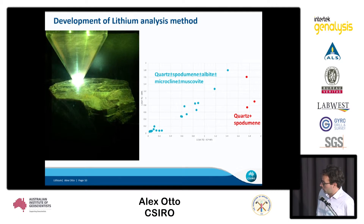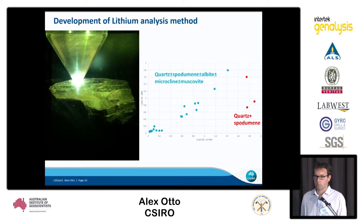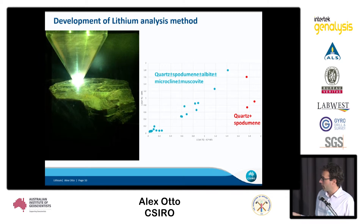On the right-hand side we had a suite of samples in two groups. One in blue is mainly a five-mineral situation with quartz, spodumene, albite, microcline, and muscovite. There is also a subset of samples from these deposits that was mainly just quartz and spodumene.